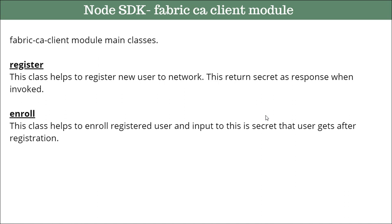Now for the fabric-ca-client module — it has mainly two classes. The first class is for registration of a user. Before you go and connect to the network, a user has to be there that is authorized to connect. That is done with this module. The register class helps you to register a new user to the network with the Certificate Authority, and once you complete registration, you receive a secret as a response.